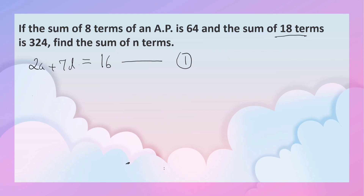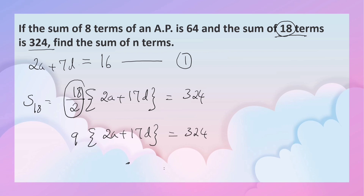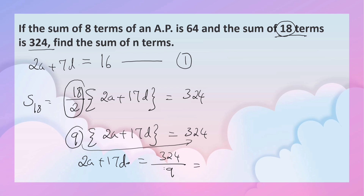We are also given that S18 = 324. S18 means n by 2, so 18 by 2 into 2A plus 18 minus 1 into D equals 324. So 9 into 2A plus 17D equals 324, which gives 2A plus 17D equals 324 by 9, that is equal to 36.